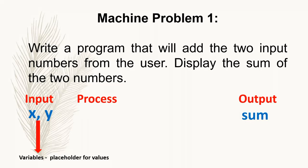x is for the first input number from the user, and y is for the second input number from the user. Sum is also a variable, which will hold the sum of the two numbers. After analyzing the problem, determining the output, and determining the input, we proceed to the process. Using the inputs x and y, here we can see the process of adding the numbers and then displaying the sum.